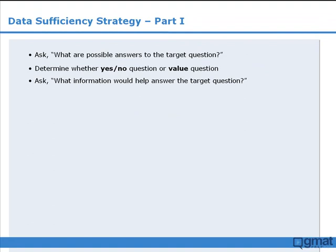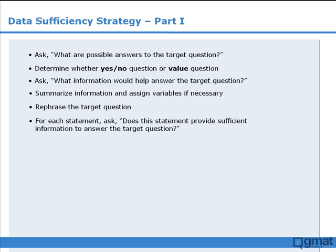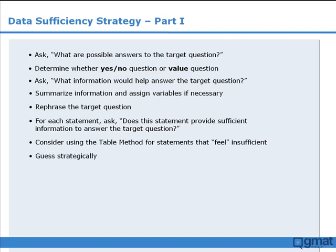There are several other strategies to consider when tackling data sufficiency questions, and we will examine them in future lessons. These strategies include: summarizing the information in the target question and assigning variables if necessary; rephrasing the target question to help identify whether or not the statements are sufficient; asking for each statement whether it provides sufficient information to answer the target question; using the table method for statements that feel insufficient; and guessing strategically. We will examine these strategies shortly.